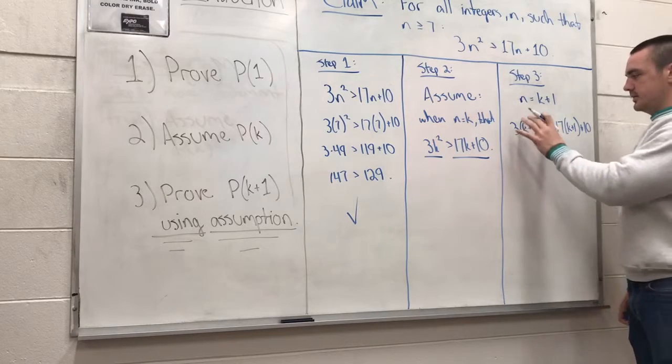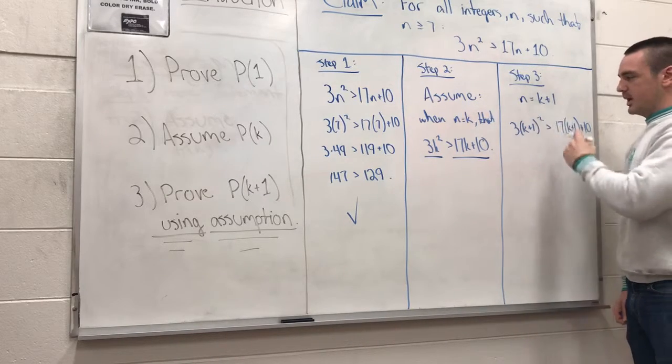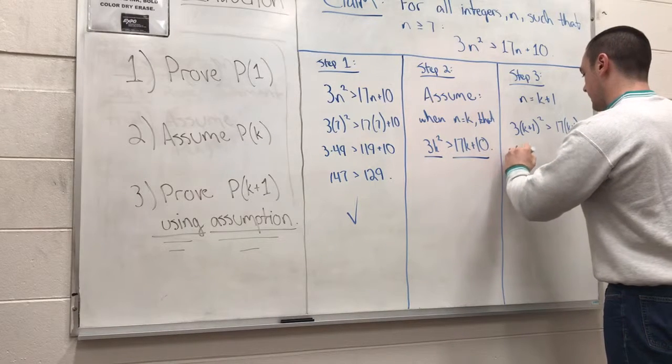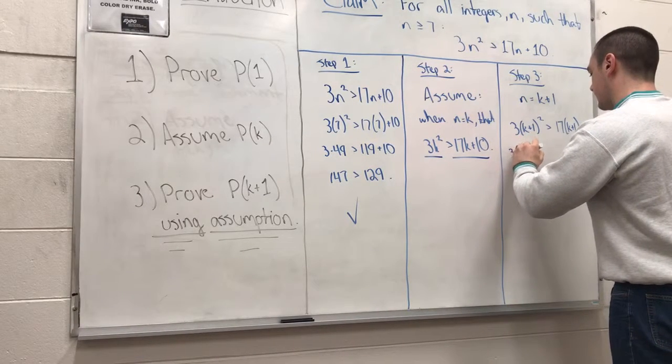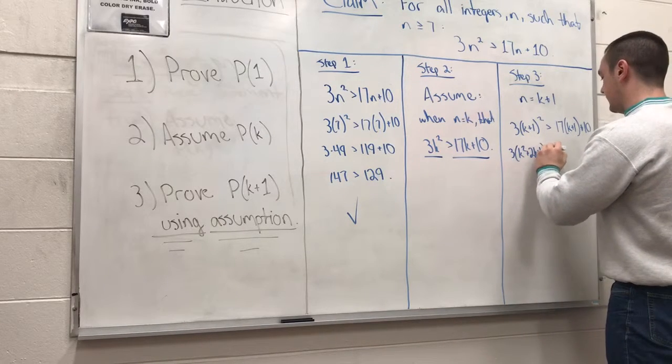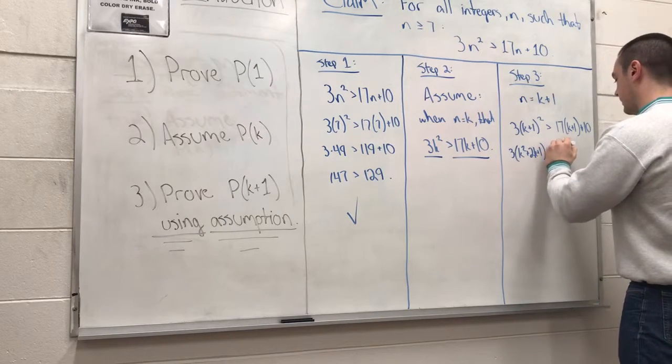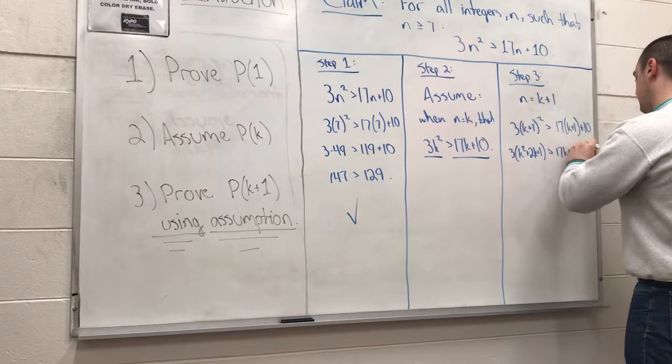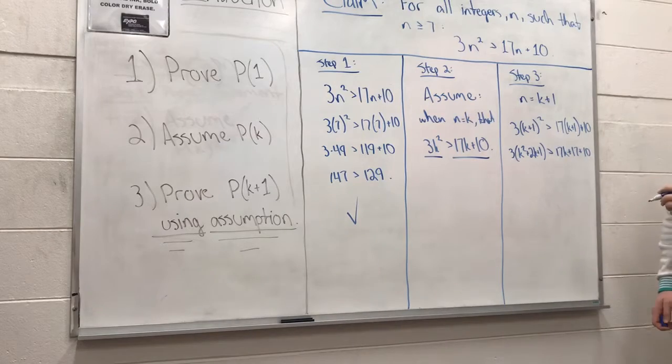Now if we do a bit of math here and we expand this, we see that this is equal to 3 times (k squared plus 2k plus 1), and that's going to be greater than 17k plus 17 plus 10.